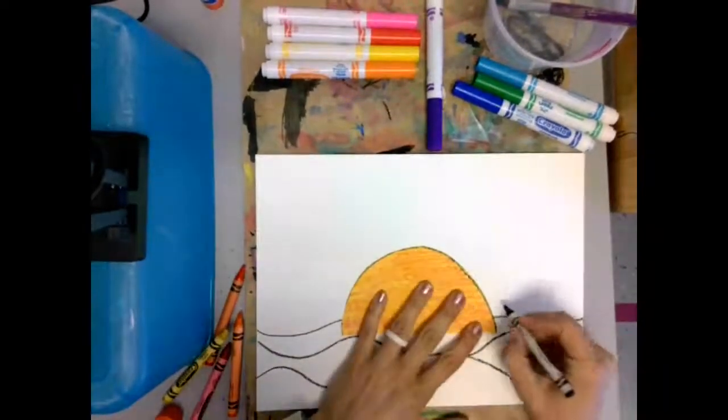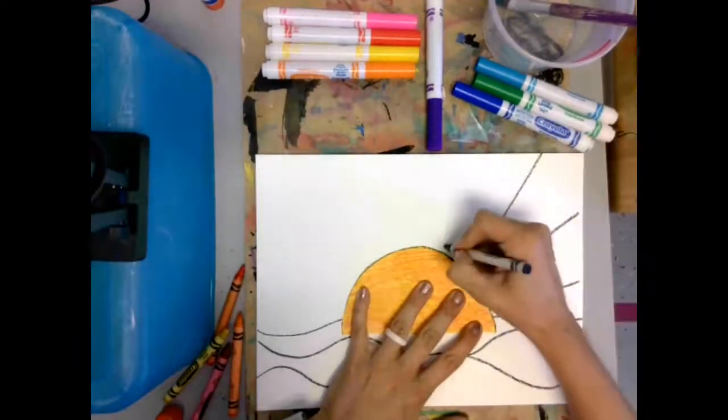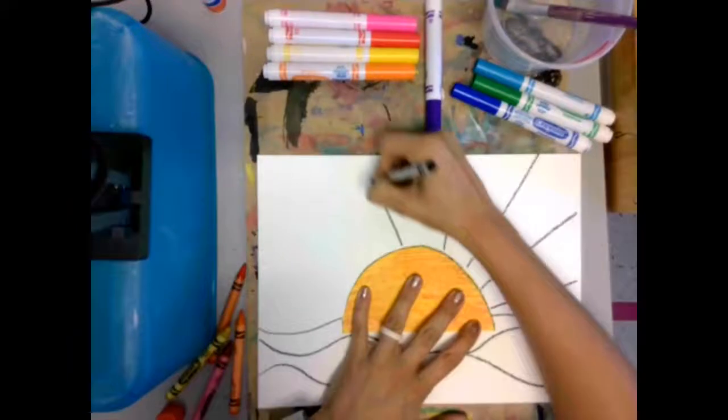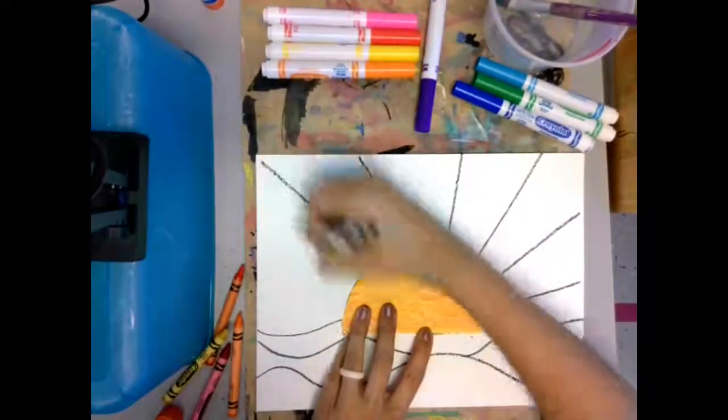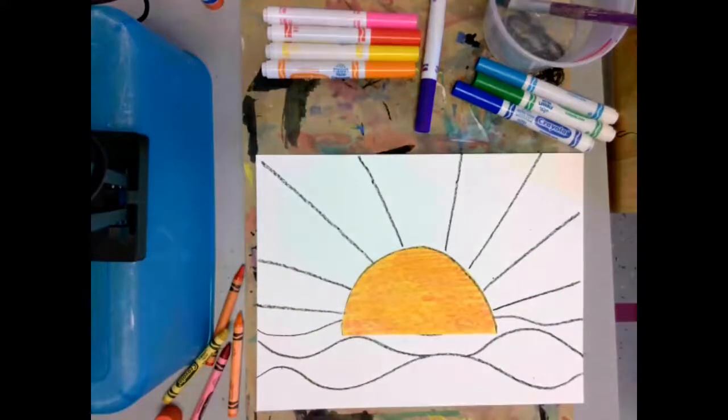And now I can continue on, and I'm going to make straight lines extending out from my sun. And those are my sun rays. That's looking pretty good.